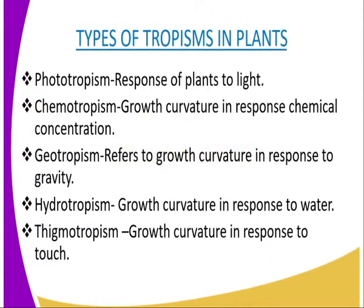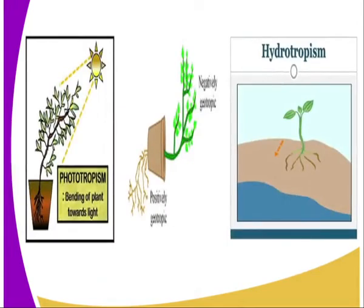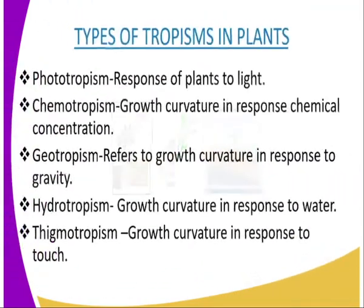We have another type of tropism known as hydrotropism. Hydrotropism is a growth curvature in response to water. In our diagram, you can see that the roots are growing towards water. This is normally evident in hydrotropism whereby these plants grow in places where there is plenty of water. You can see the roots are growing towards the water, so the roots are positively hydrotropic, while the shoot grows upwards in the direction where there is no water — so the shoot has got negative hydrotropism.